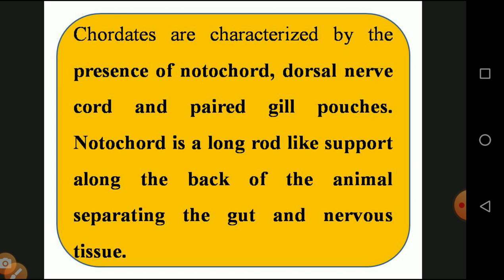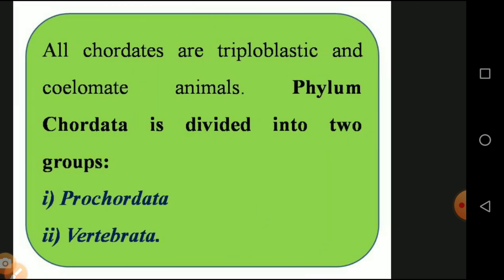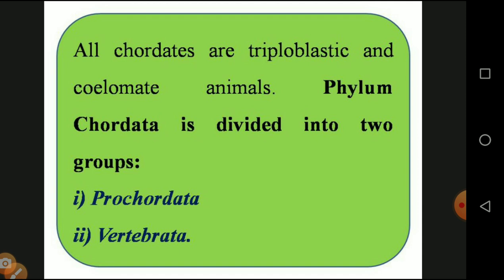The spinal cord is divided into upper and lower sides, separating the gut and nervous tissue. All chordates are triploblastic and coelomatic animals. Triploblastic means the presence of ectoderm, endoderm, and mesoderm. Coelomatic organism means the presence of a body cavity. For example, in chicken and mutton, the digestive system is totally different — it is not attached to the body wall.